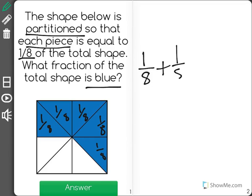So if I were to add one-eighth together five times, I would get a total of five-eighths.